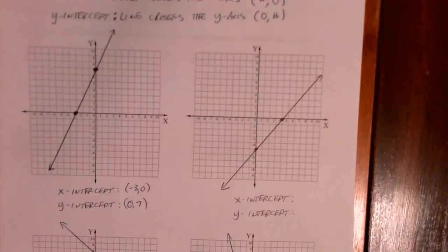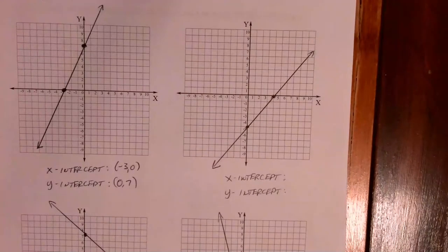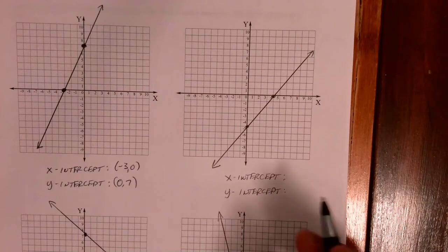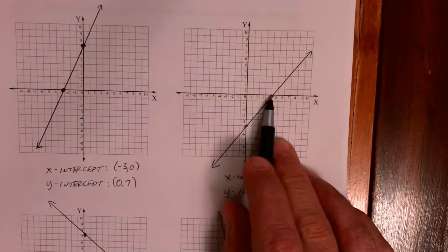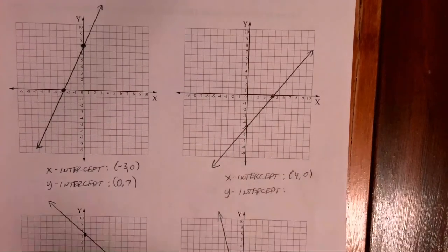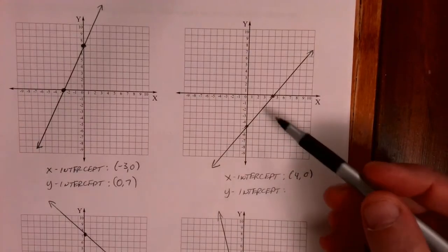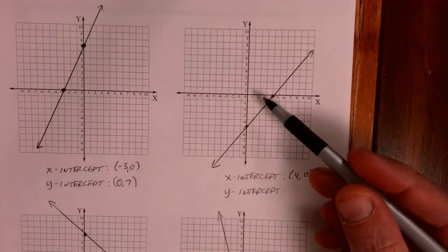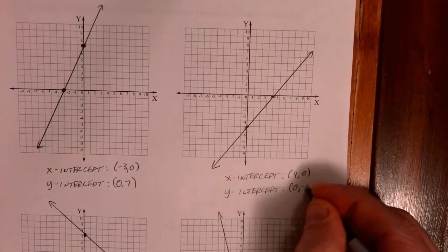Next one. What is the x and the y-intercept on this line? I'm going to do my x-intercept first. It looks like I went over four, so my x-intercept is four, zero. And it looks like my y-intercept — I went down five — so my y-intercept is zero, negative five.